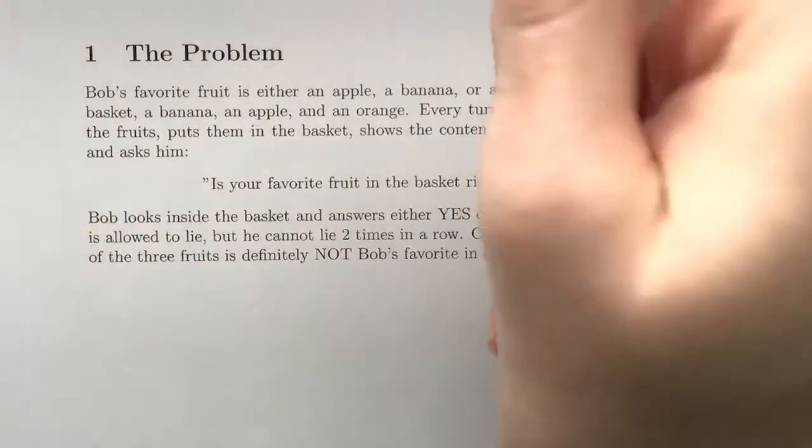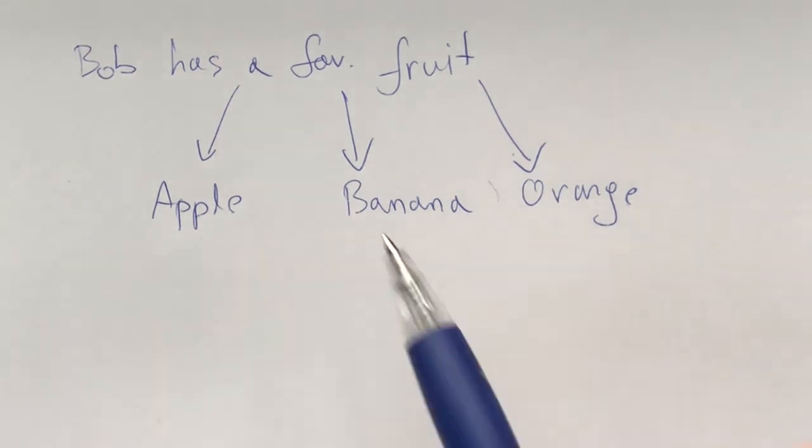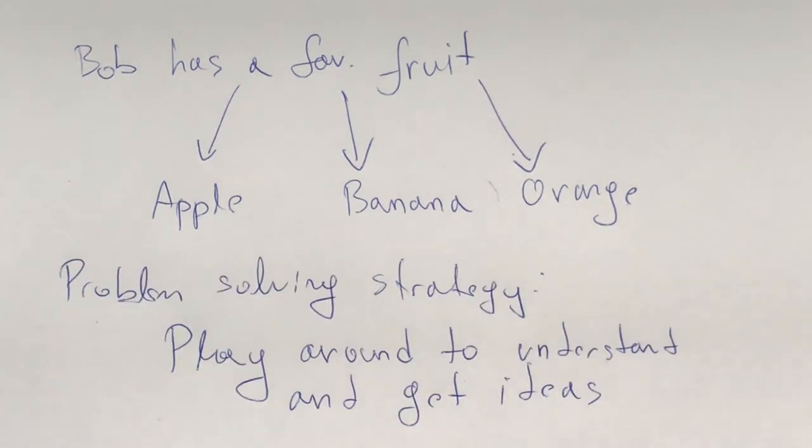Okay, so let's begin. To summarize, Bob's favorite fruit is either an apple, banana, or orange. Alice puts a couple of these fruits in a basket and asks him if his favorite fruit is there. We have a condition that Bob can lie, but not twice in a row. Now, the first problem-solving strategy would be whenever you begin to attempt a problem, play around with it to get a better understanding of what the problem is about and to get some ideas.